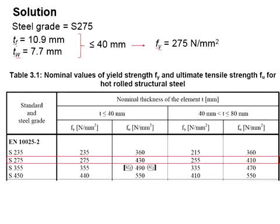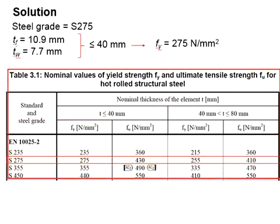Next, you need to determine the steel grade. The steel grade is given as S275. You need to refer to table 3.1 in order to get the FY.